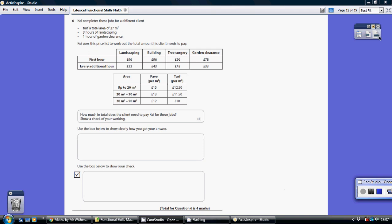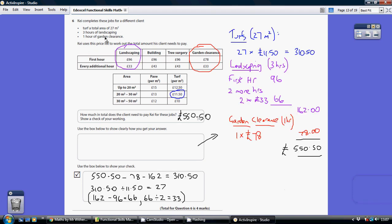So, question 6. We've got to go through and cost out all three of these bits that Kai's done in this garden job. So first of all, he's turfed a total area of 27 metres squared. So where's the turfing? Here we go. Here's the turfing.